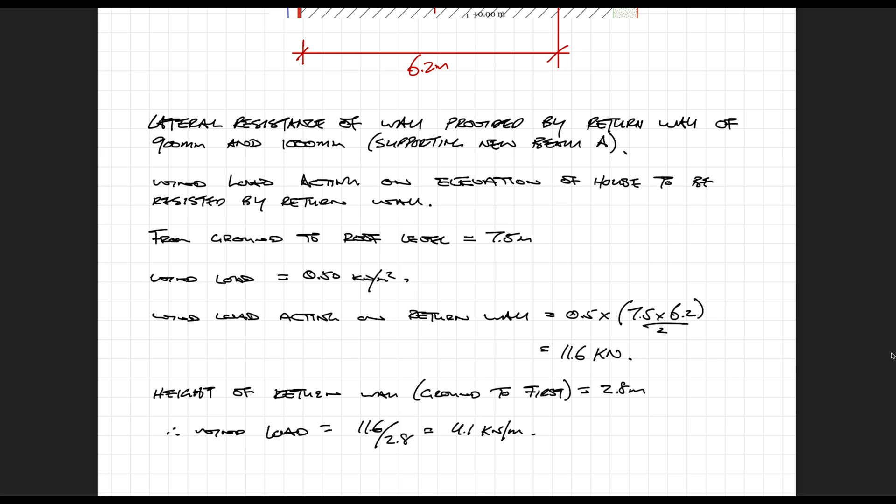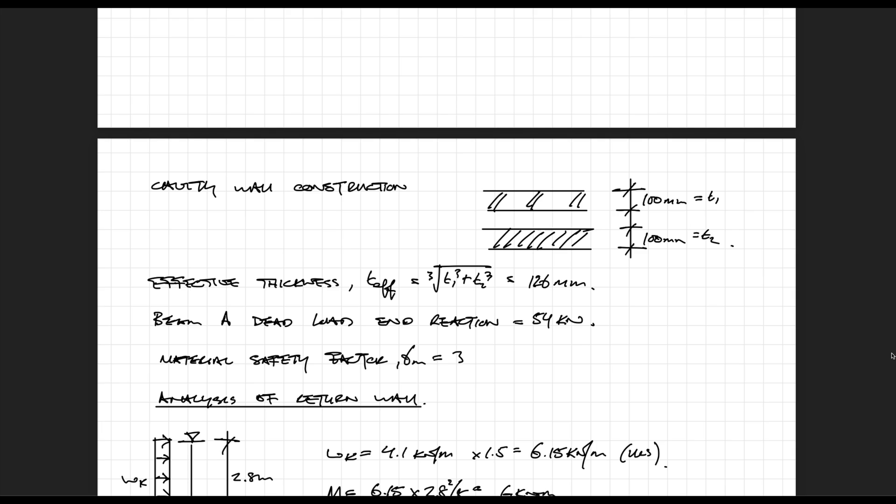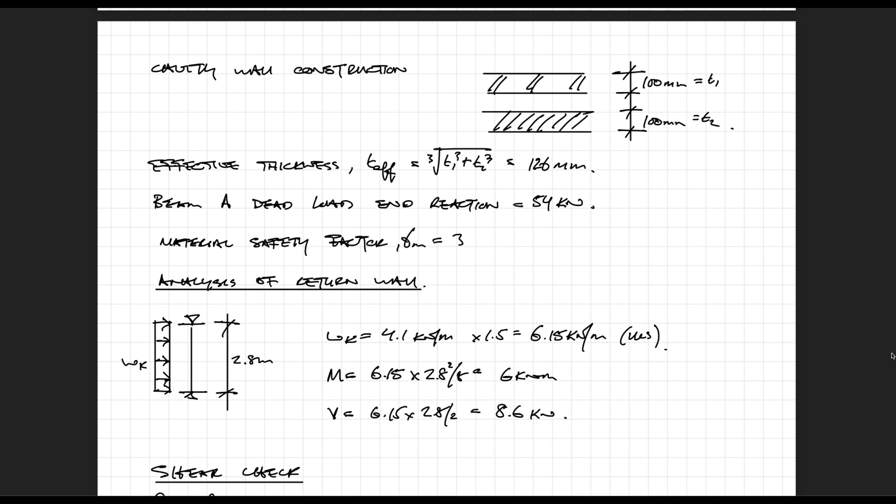The external wall is made up of 100mm blockwork, a cavity, and 100mm brickwork. Because it's cavity wall construction, our effective thickness needs to be calculated and that comes to 126mm. I mentioned earlier that this internal wall is supporting the floor and wall above. From a previous calculation I worked out the beam's end reactions and have a dead and live load. Because the gravity load actually benefits or enhances the resistance of the wall, I'm only going to consider the dead load and ignore the live load completely. I'm using a material safety factor of 3. We can do a quick 2D analysis and work out the bending moments and shear force.